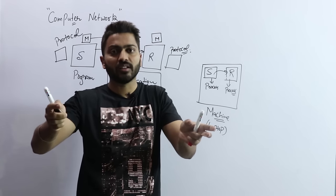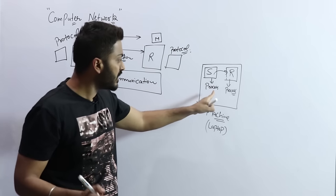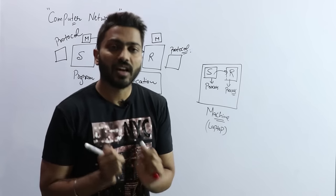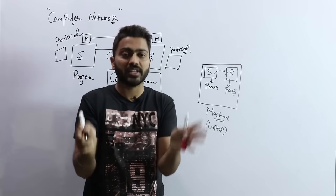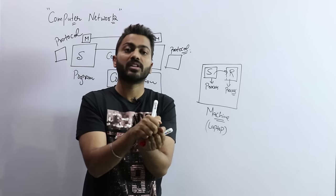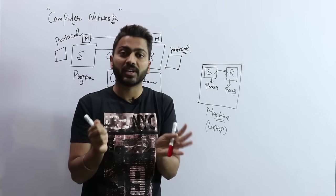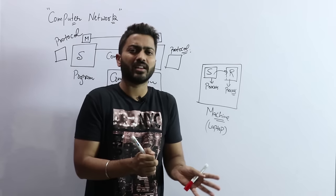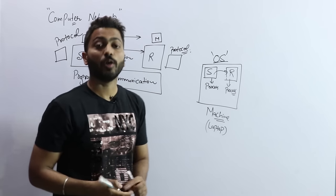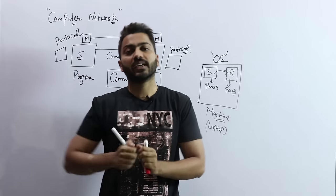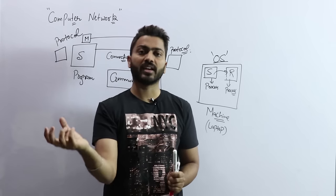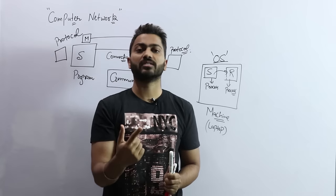A user process is sending some kind of message and that message is printed on the monitor. But here, within the same machine, when one process communicates with another process, that is called inter-process communication. Computer network does not deal with that part — inter-process communication is handled by the operating system. The OS handles how a process passes instructions to another process, like keyboard to monitor.